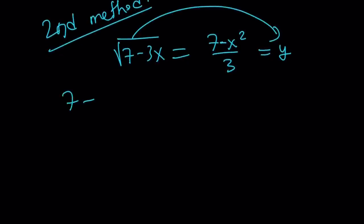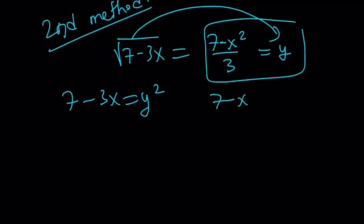Square both sides. You're going to get 7 minus 3x equals y squared. And then take the second one. Cross multiply. 7 minus x squared equals 3y. Switch these around because they're going to be minus and plus. You get 7 minus 3y equals x squared.